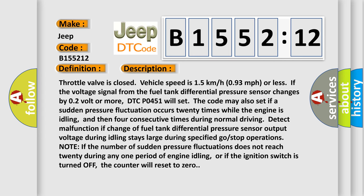Throttle valve is closed. Vehicle speed is 1.5 km/h or less. If the voltage signal from the fuel tank differential pressure sensor error rises by 0.2 volt or more, DTC P0451 will set. The code may also set if a sudden pressure fluctuation occurs more than 20 times while engine is idling, and then four consecutive times during normal driving. Detect malfunction if change of fuel tank differential pressure sensor output voltage during idling stays large during specified go/stop operations. Note: if the number of sudden pressure fluctuations does not reach 20 during any one period of engine idling or if the ignition switch is turned off, the counter will reset to zero.